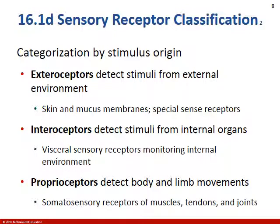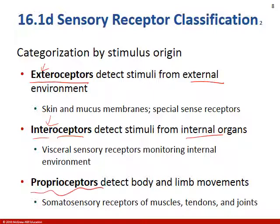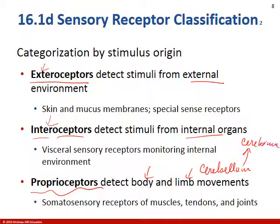You can further categorize receptors by the type of stimulus. We have exteroceptors for the external environment, interoceptors for the internal environment, and then proprioceptors. Remember, these were detecting body and limb movements, and all of that information was being sent to the cerebellum so it could coordinate with the cerebrum about movement.